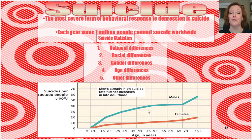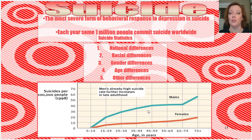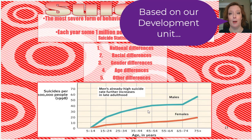Suicide is the most severe form of behavioral response to depression, and each year about one million people commit suicide worldwide. You do see some national differences, and differences between races, genders, ages, and different situations. Contrary to popular belief, people 75 and older actually experience higher rates of suicide than any other group of people. Can you hypothesize why that might be?